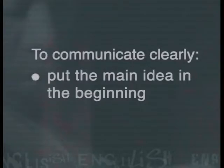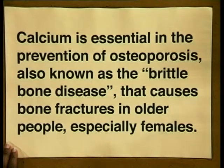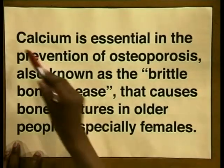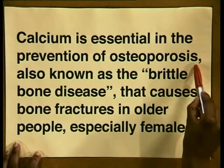Let's begin with the first point on the list: put the main idea in the beginning. This conveys the message clearly, and then you follow it up with less important information. Here's an example: 'Calcium is essential in the prevention of osteoporosis, also known as the brittle bone disease that causes bone fractures in older people, especially females.' The main idea is that calcium is essential — it helps to prevent osteoporosis. This is the important information, and it's given first.